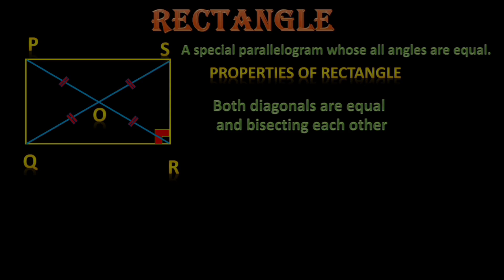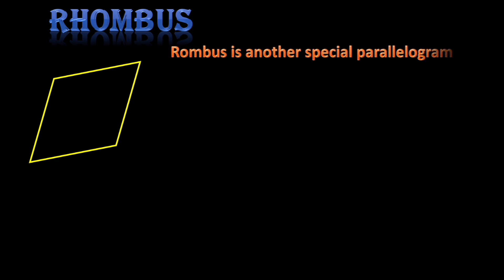Rhombus is another type of parallelogram where all sides are equal. Any parallelogram whose all sides are equal is called a rhombus.